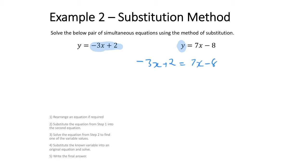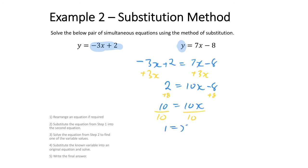Now we solve that equation to find a value for x. The first step is to put all the x terms onto one side. Moving negative three x to the right-hand side — the opposite of negative three x is plus three x — so adding three x to both sides gives us: two equals ten x minus eight. Then adding eight to both sides gives us ten equals ten x. Dividing both sides by ten, x equals one.